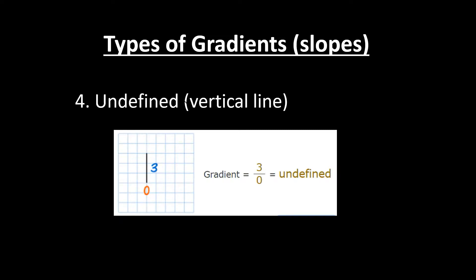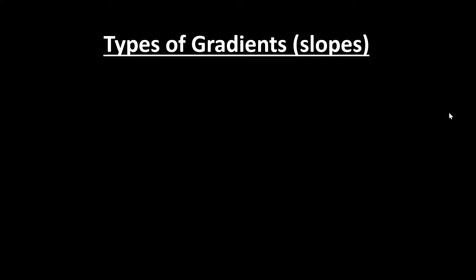The last type is a vertical line, and the value of the gradient is undefined. The rise value here is three, so gradient is rise over run — three divided by run. There's no change in X, so it's divided by zero, and anything divided by zero is undefined in mathematics. That's why the slope value for a vertical line is undefined.